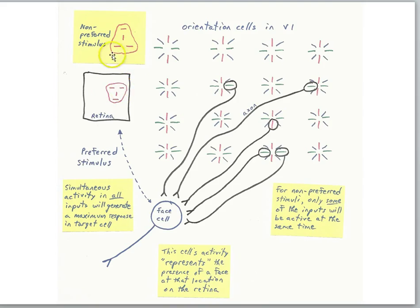For an inverted face, the horizontal eyes here, the eyes here, would be activating horizontal cells down on the lower portion of the diagram. The nose might get similar activity, so this input might remain active for the inverted face, but these cells would no longer be active.